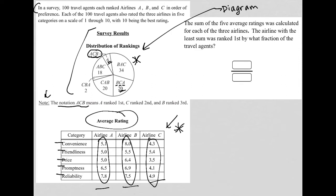But it seems like airline C. Let me just erase it so we can see it clearly. It seems like airline C has lower numbers across the board. Airline C is lowest in convenience. It is not lowest in friendliness, but it's not the highest either. It's much lower in price, much lower in promptness and much lower in reliability.